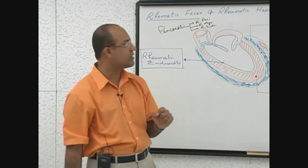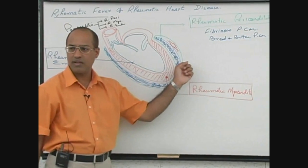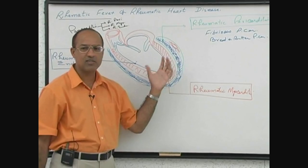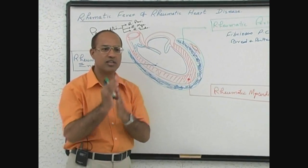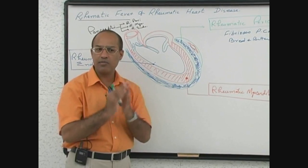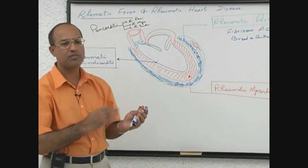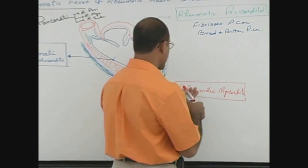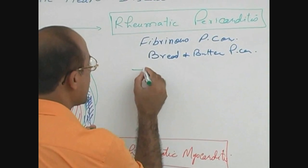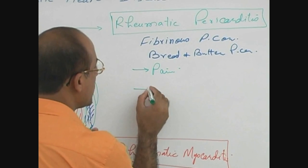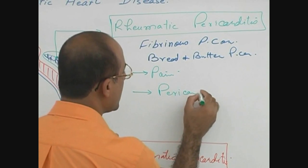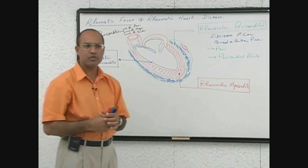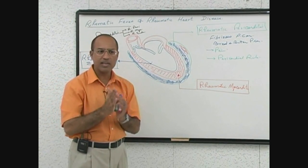The most important point is that if you put a stethoscope on the pericardium, you will find a scratchy sound because when the heart is going through systole and diastole, the inflamed pericardial layers are rubbing against each other. This produces a special type of scratchy sound called pericardial rub. So you will find pericardial pain plus pericardial rub.